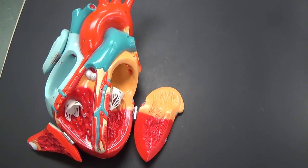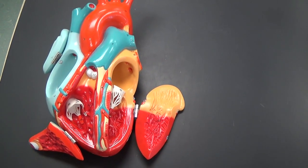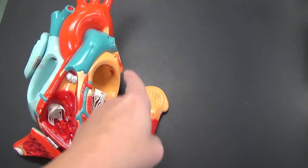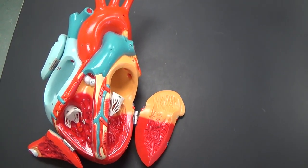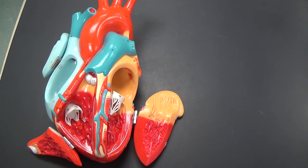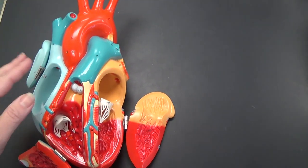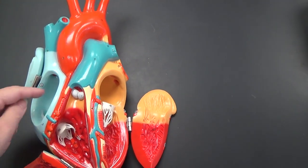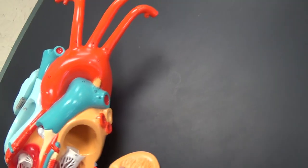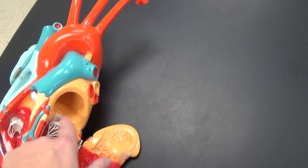When you're thinking about the heart, the first thing you want to do is think about anatomical position. So this is the right side, this is the left side. The heart has four chambers. Two of them are the receiving chambers of the heart. This is the right atrium right through here. This is the left atrium right here.